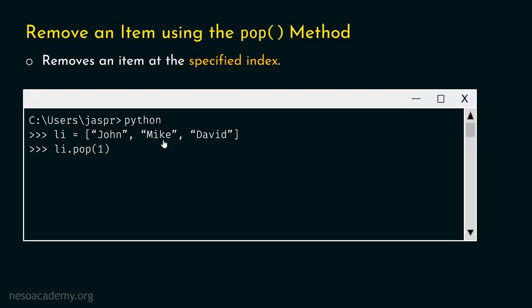With this, we can remove mike from the list. There is one interesting thing: as soon as we hit enter, we will get mike as the result. Why? Because the pop method not only removes the item, but it also returns the deleted item. So we can store this item in a variable and use it later in our code. Whenever you want to use the deleted item in your code, use the pop method. Otherwise, you can use the remove method.